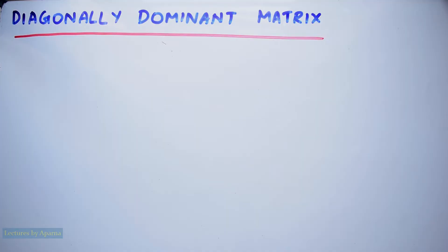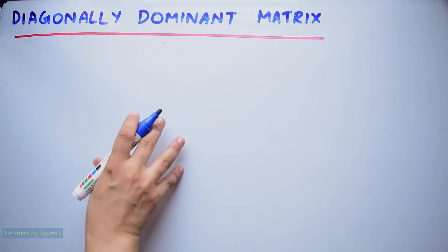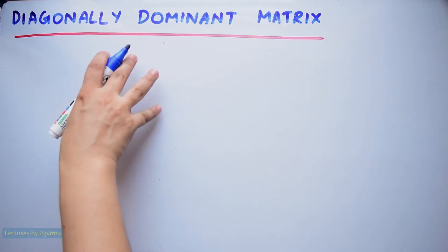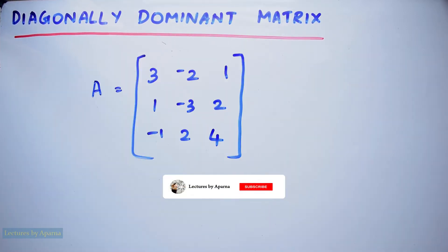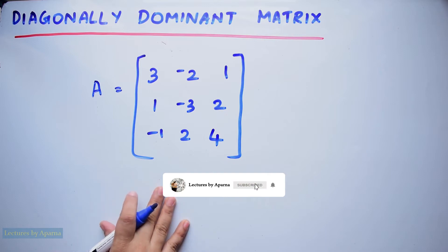Hello everyone, welcome to lectures by Apanna. In today's video we will see a matrix called diagonally dominant matrix. Consider the 3 by 3 matrix like this.